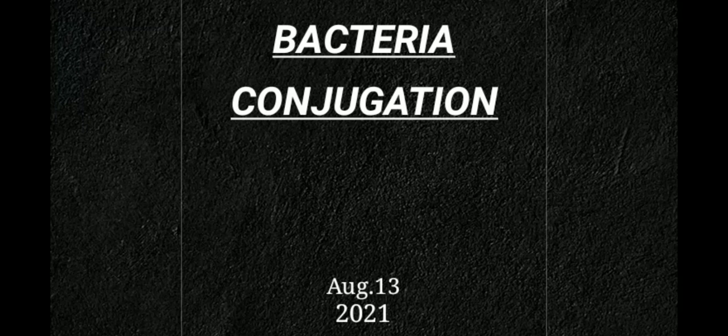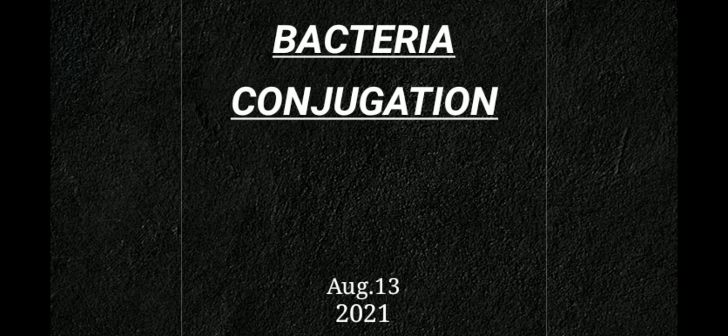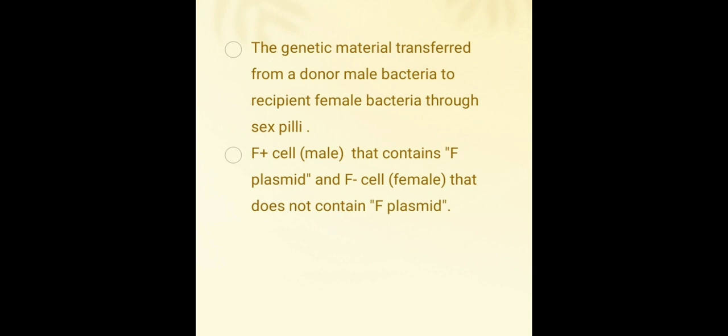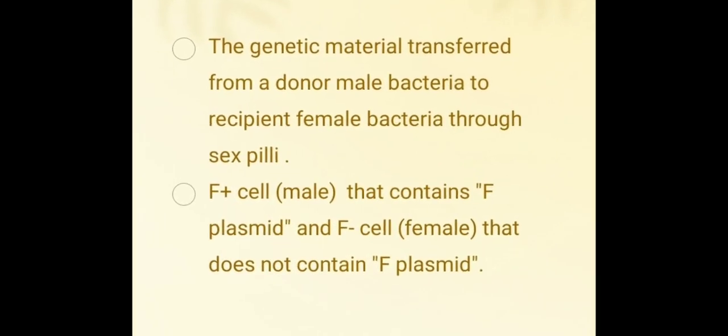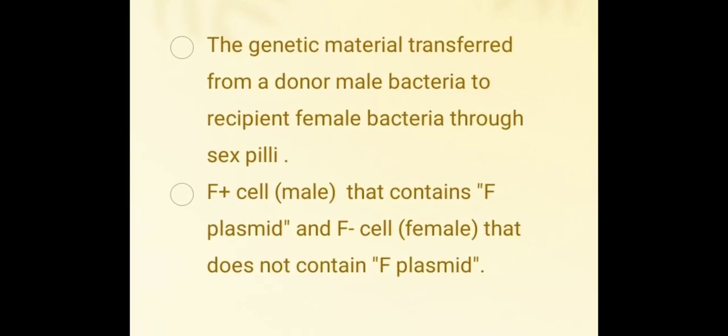Conjugation is a genetic transfer process in which genetic material is transferred from a donor male bacteria to a recipient female bacteria through cell-to-cell contact. In 1946, this was discovered in E. coli bacteria that contain F plasmid.